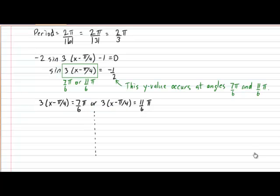Let's first determine the value of x which will cause an angle of 7 pi over 6. Moving the 3 to the other side of the equal sign will give us x minus pi over 4 equal to 7 over 18 pi. And finally, isolating the x will produce a value of x equal to 23 over 36 pi.